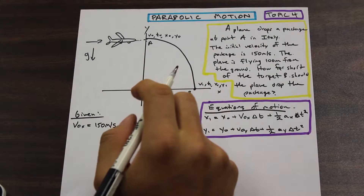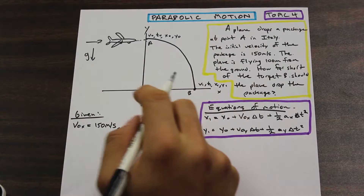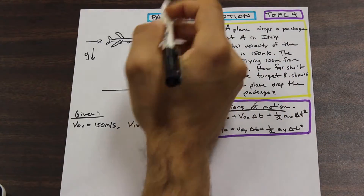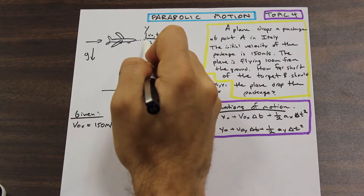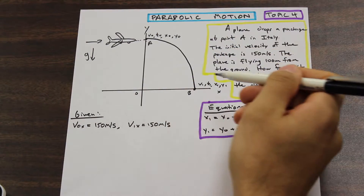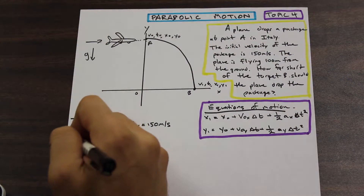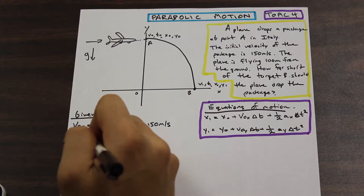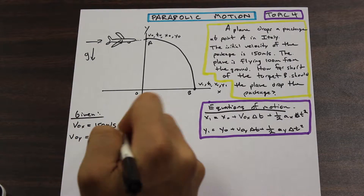Let's write down what we're given. The initial velocity in the x direction is equal to 150 meters per second. The final velocity at point B in the x direction is also 150 meters per second. What's the velocity in the y direction? At the apex of the parabola, the velocity in y is always zero, so our initial y velocity is zero meters per second.